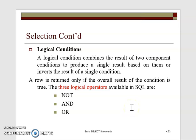We also have logical conditions in the selection. A logical condition combines the results of two component conditions to produce a single result. A row is returned only if it adheres to the condition you have specified. There are three kinds of logical operators: NOT, AND, and OR. NOT means results should not include what you specified; AND means include both conditions; OR means include either condition.